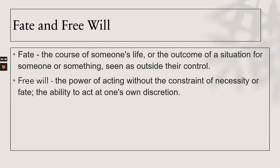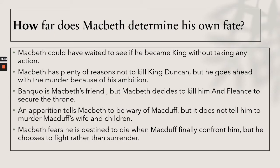Fate is the course of someone's life seen as outside their control; free will is the power of acting at one's own discretion. Macbeth could have waited to see if he became king without taking any action. He has plenty of reasons not to kill King Duncan but goes ahead because of his ambition. He decides to kill Banquo and Fleance to secure the throne. An apparition tells Macbeth to be wary of Macduff, but does not tell him to murder Macduff's wife and children. When Macbeth finally confronts Macduff, he chooses to fight rather than surrender.